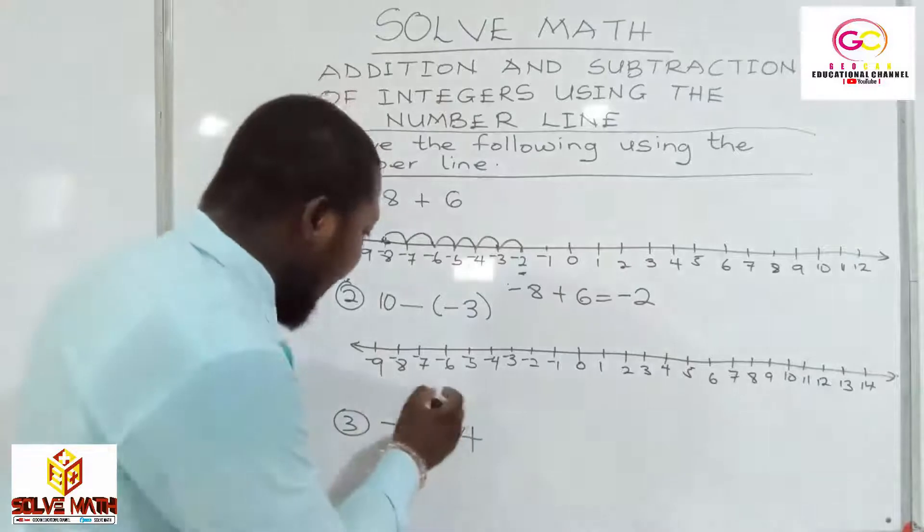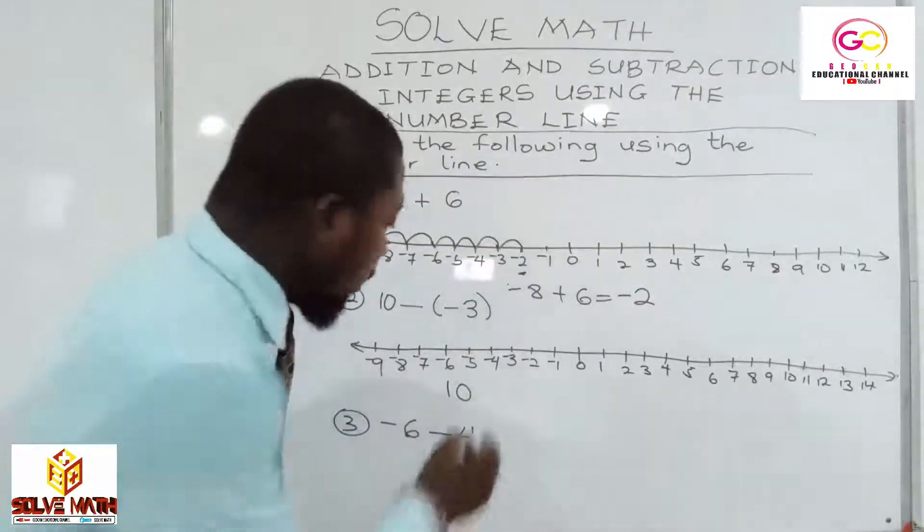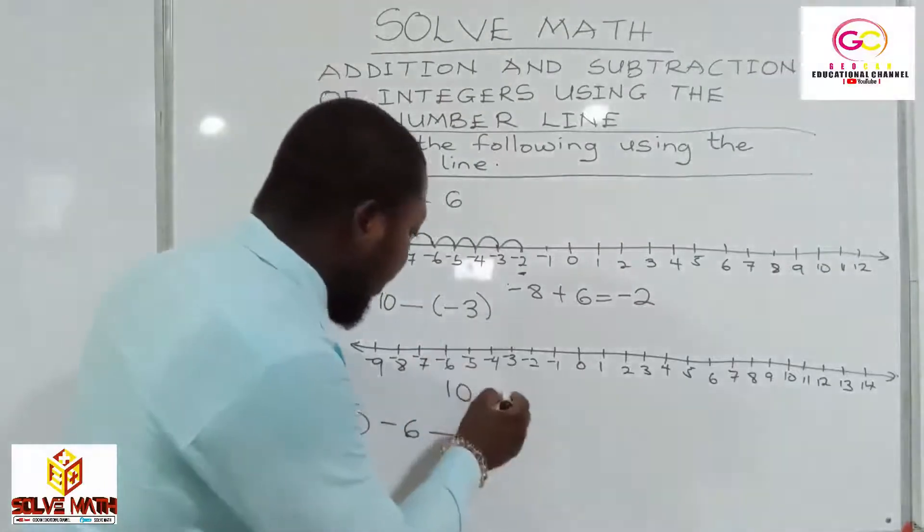Good. So, with this, it becomes what? 10. The minus minus becomes what? Plus. So, plus. What do we have here? 3.